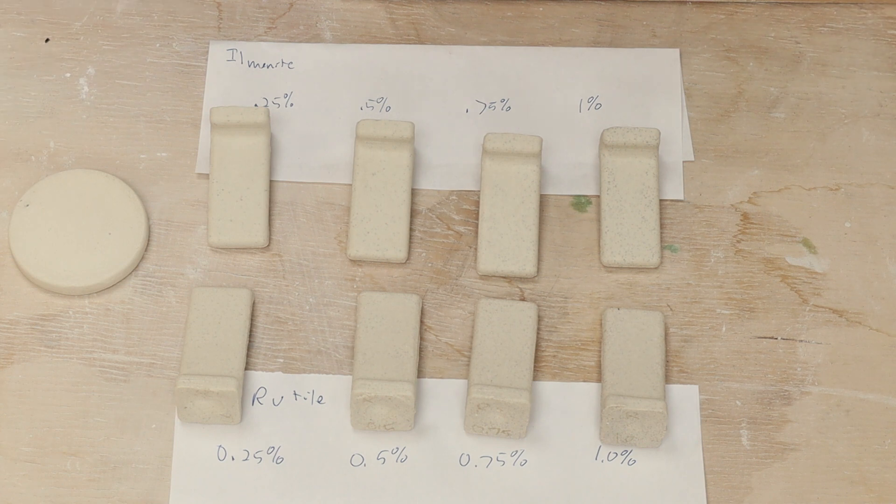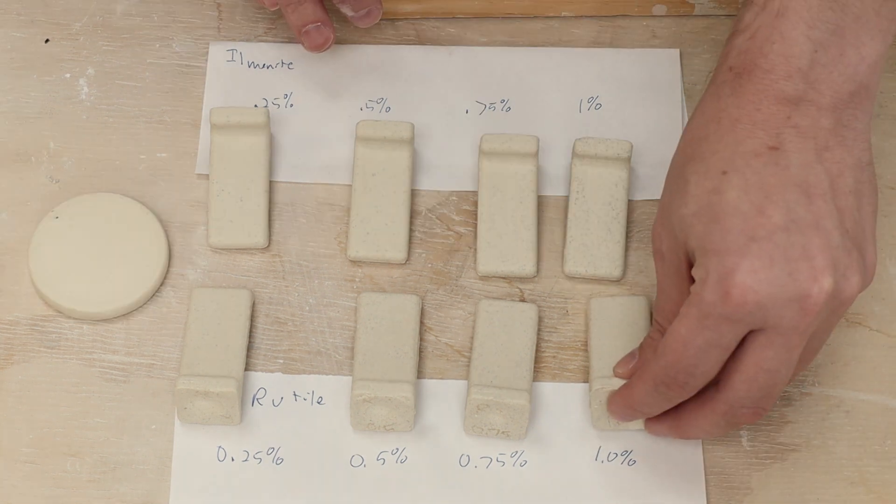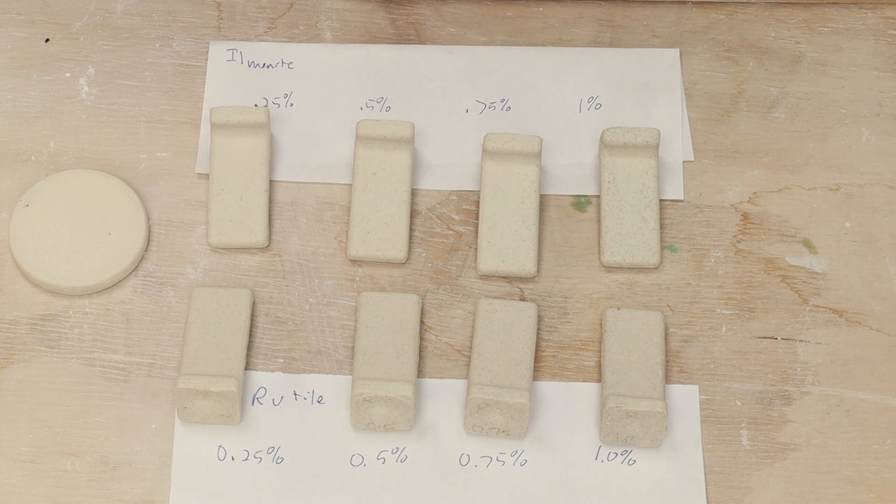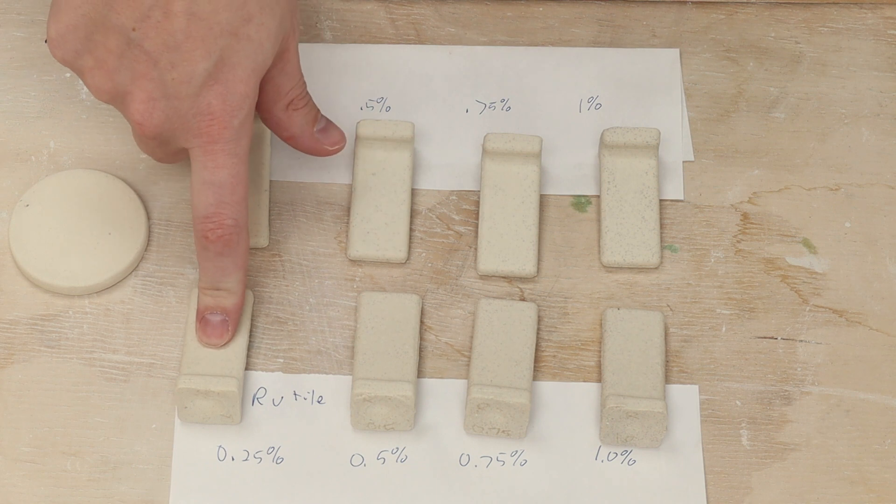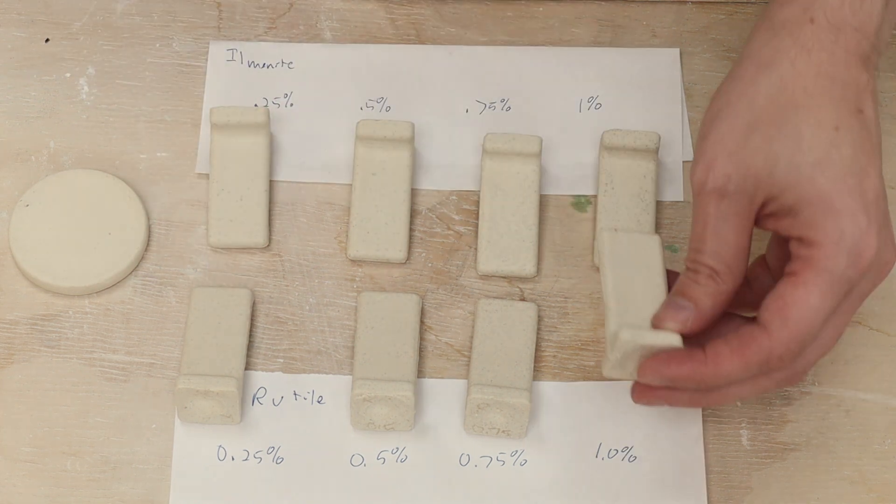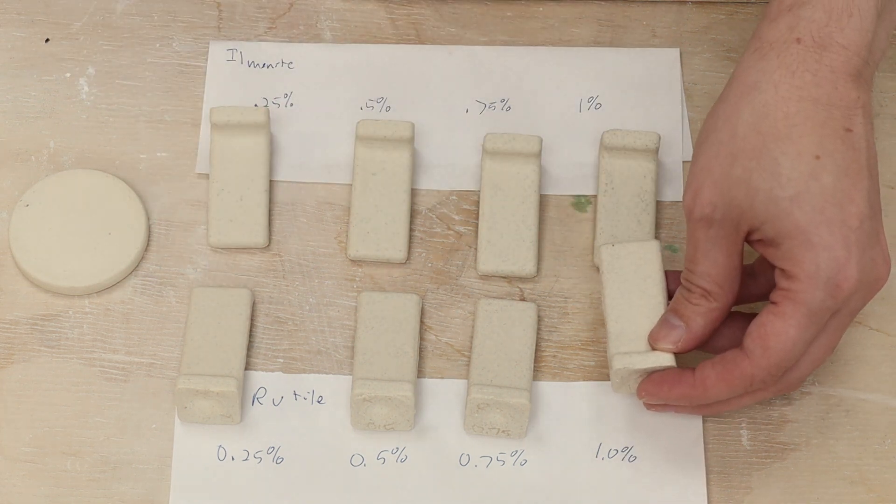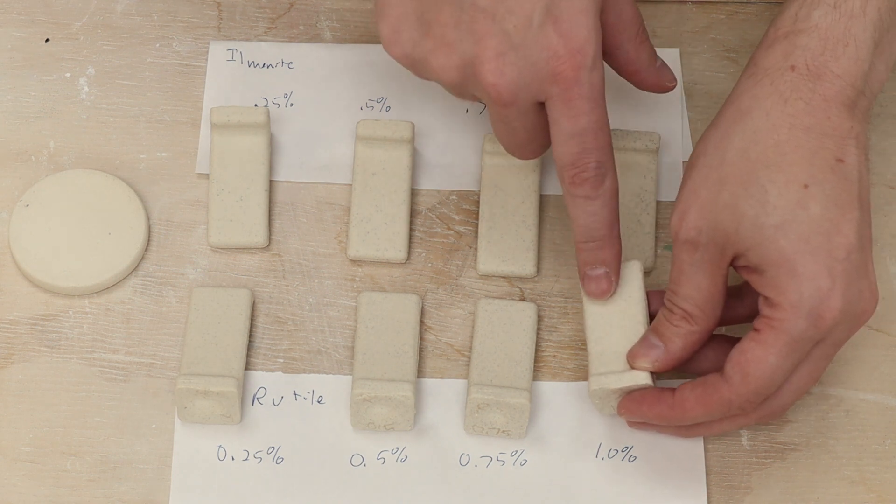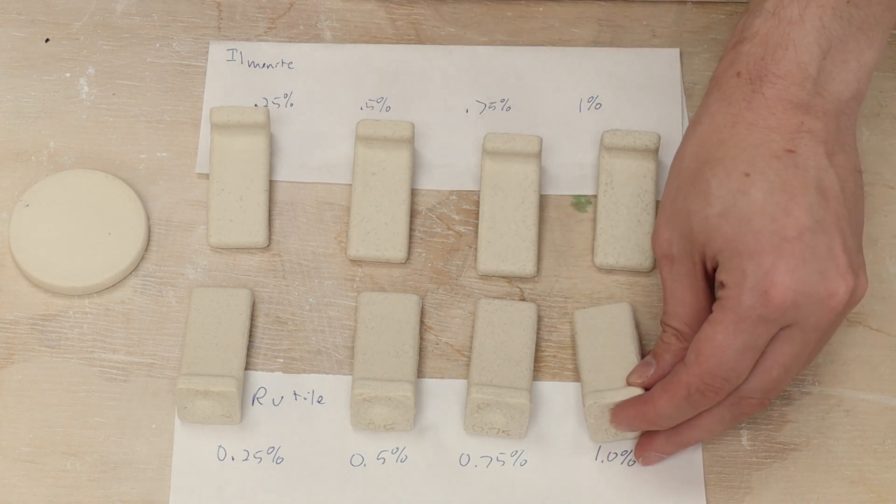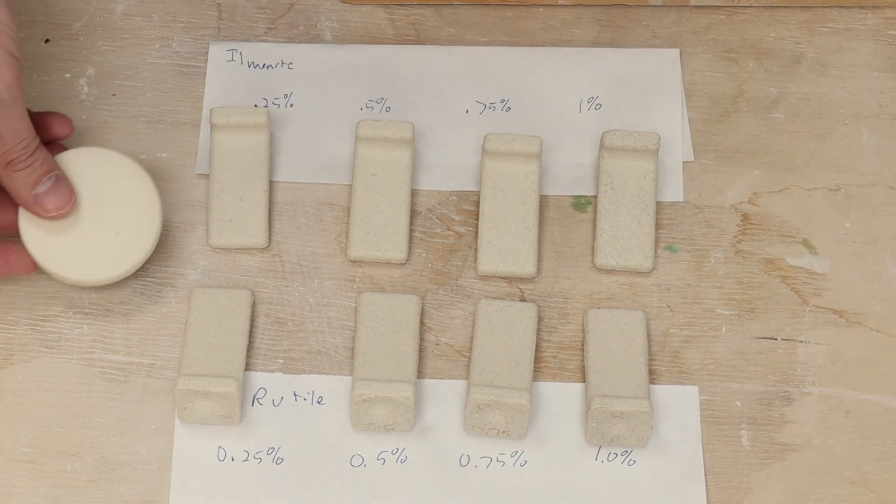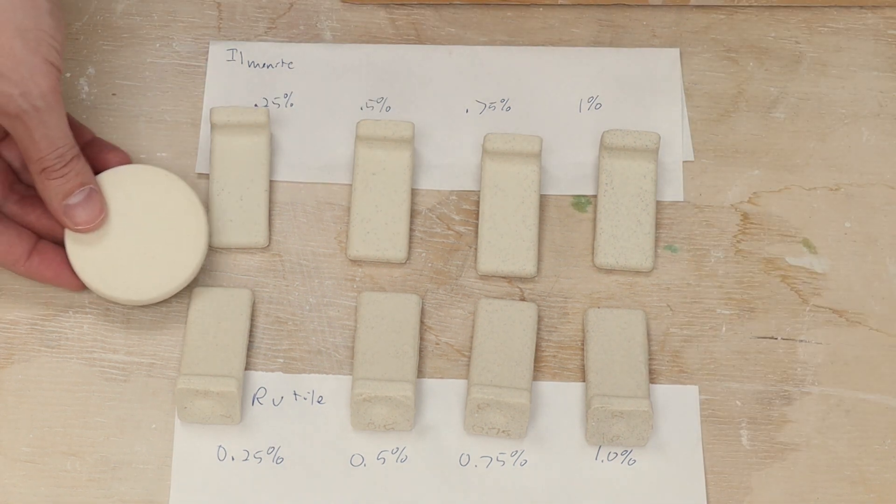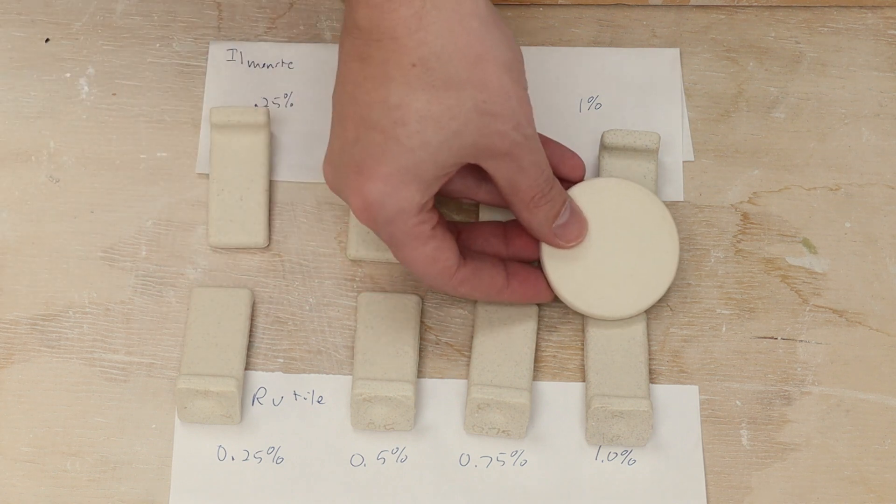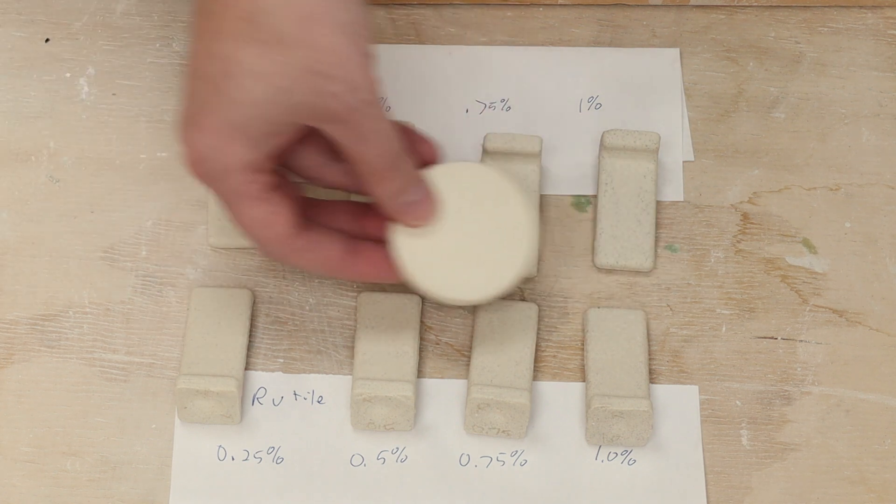Here are the results of all the tests. These all fire just fine to cone 6. So these are lined up in the order that I made them. So this is the ilmenite from 0.25 to 1% and the rutile from 0.25 to 1% as well. And this one here was supposed to melt a little and create brown specks. These look maybe brown and I don't think that they melted very much. And just for comparison, here is a piece of fired raw clay that's the right color. So you can see that all of them, they definitely do have a speckled effect relative to just the bare clay.